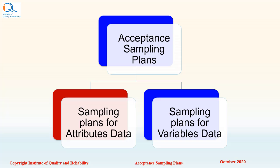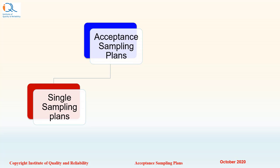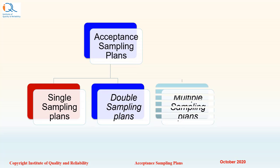This obviously depends on the type of data that you are using for measurements or acceptance. In this video, we will discuss plans for attribute data. Acceptance sampling plans can be single sampling, double sampling, or multiple sampling plans, depending on how many samples you are taking. In single sampling plans, we take decisions based on a single sample. In double sampling, you have two samples based on which you take decisions, and in multiple sampling, you can take decisions based on multiple samples. As you increase the number of samples, the sampling plans can become a little complicated to execute. Therefore, single sampling plans are most commonly used because of the simplicity of usage.